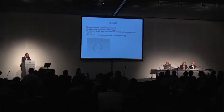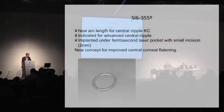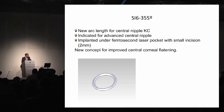In the new developments of Medifacos, the new Keraring 355 allows use of the keraring for a new specific type of keratoconus, which is nipple-tip keratoconus. It's indicated for advanced central nipple-tip. The specificity of this ring is that it's very difficult to implant in a tunnel, so we are obliged to create a pocket with a femtosecond laser with a very small incision to implant the ring.